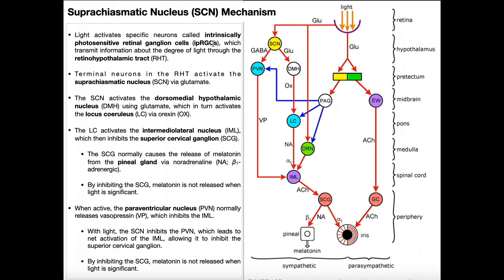From the IPRGCs, information about light is transmitted through the retinohypothalamic tract to the suprachiasmatic nucleus. We're first going to consider the case where there is light. The IPRGCs become activated, and since they're glutamatergic, they release glutamate, which activates the suprachiasmatic nucleus. So when there is light, the suprachiasmatic nucleus is actually activated.